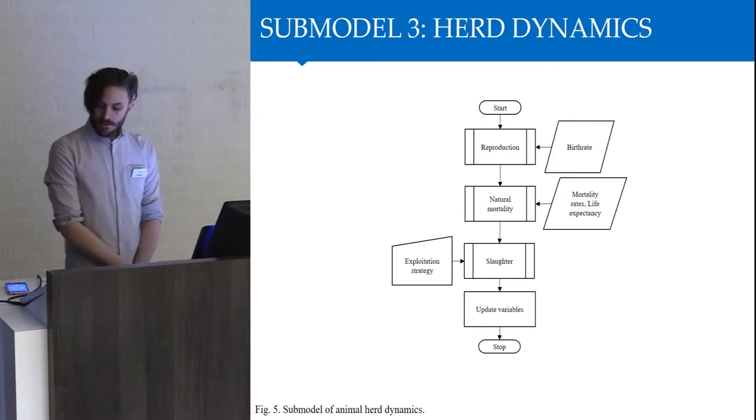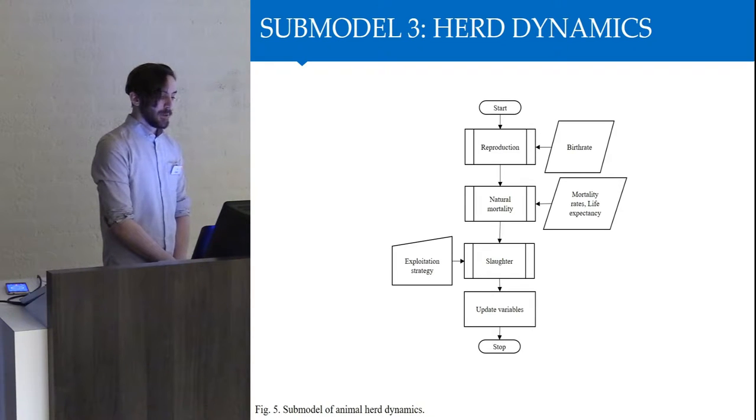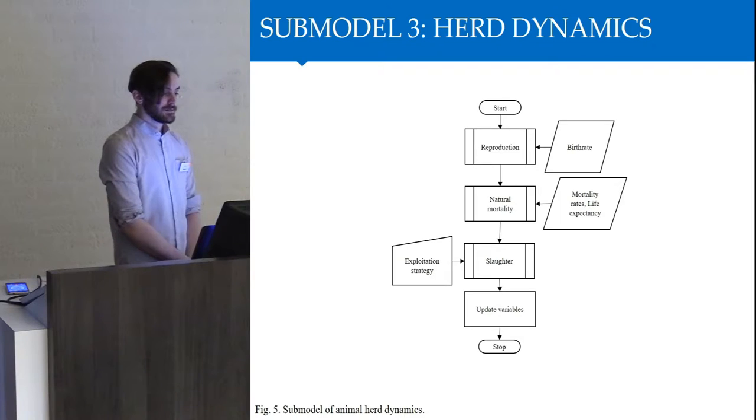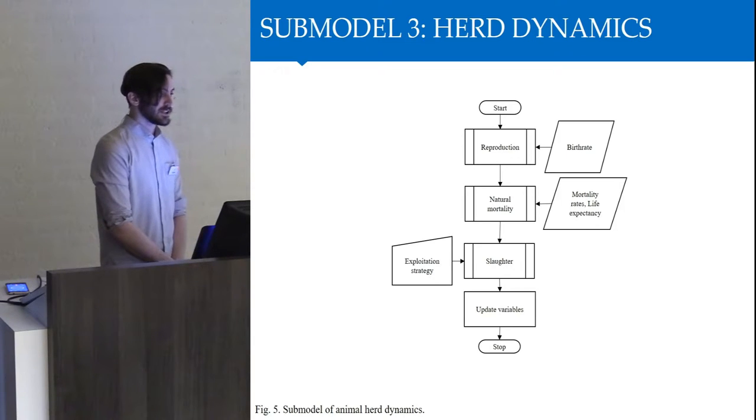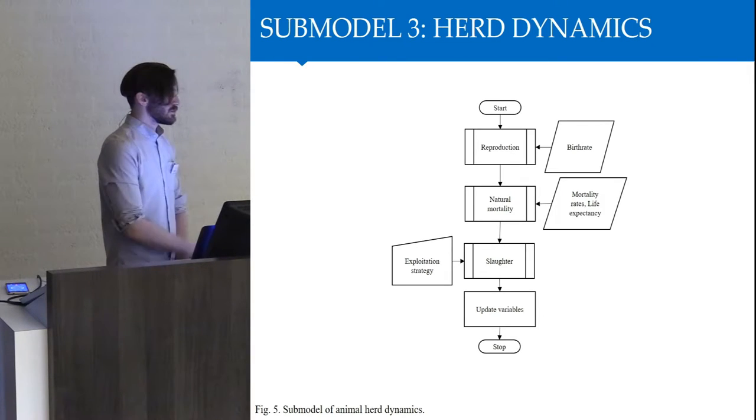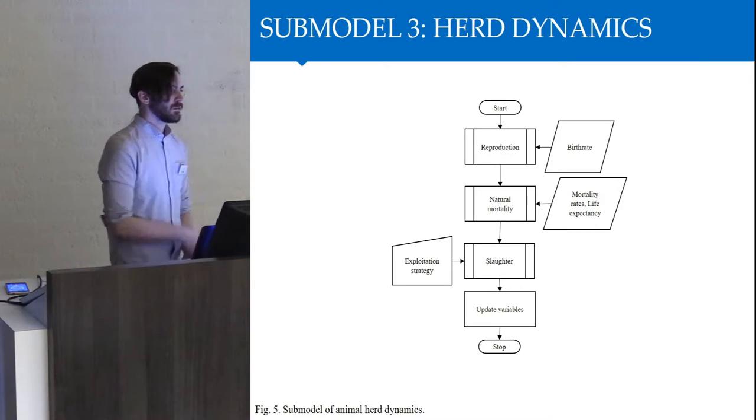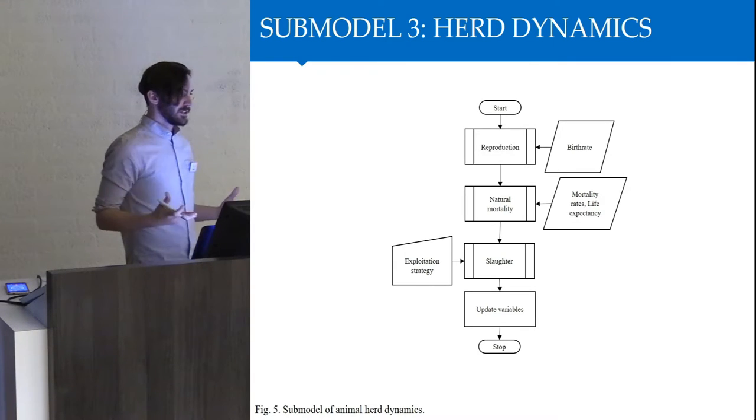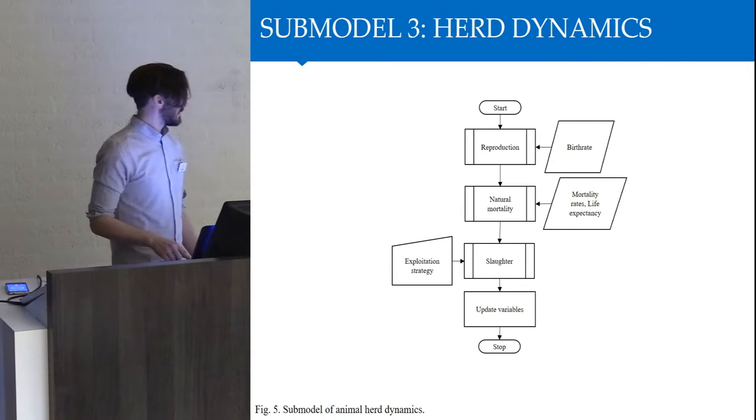The next process is herd dynamics, which represents the animal husbandry. Similar to the human population model, a settlement is granted a herd of sheep, cattle, horse, or a combination. These animals reproduce according to the birth rate that each adult animal is given, dependent on species. Then there's a natural mortality in which animals die because of disease. And then agents will slaughter their animals depending on the slaughter rates, which are determined by the strategy of exploitation. For example, settlements exploiting their cattle for milk will try and kill almost all the male animals and a fair amount of female young animals to ensure that they get the maximum milk output. Then the variables again are updated.